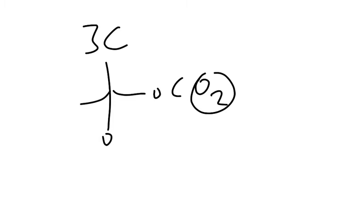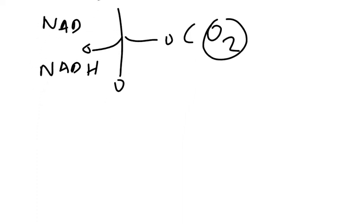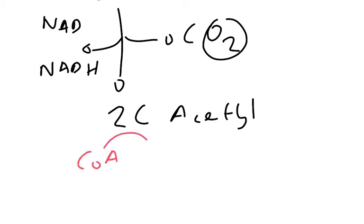At the same time as this decarboxylation, a dehydrogenase enzyme removes an electron and a hydrogen — so this is an oxidation step. It takes a carrier molecule called NAD and transfers onto it the electron and the hydrogen, forming reduced NAD, or NADH. That produces a two-carbon fragment, because we've lost a carbon dioxide, and that two-carbon fragment is an acetyl. This acetyl gets picked up by a carrier molecule called coenzyme A, and coenzyme A delivers it to a four-carbon compound.